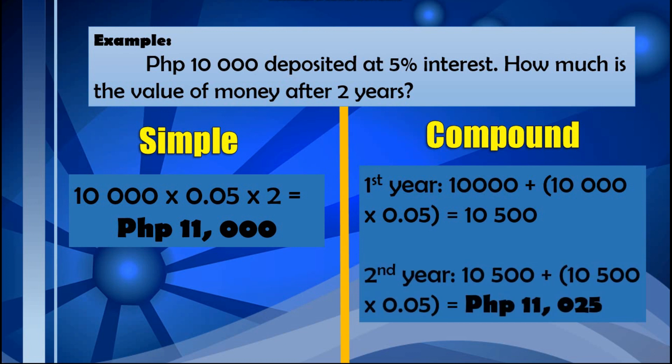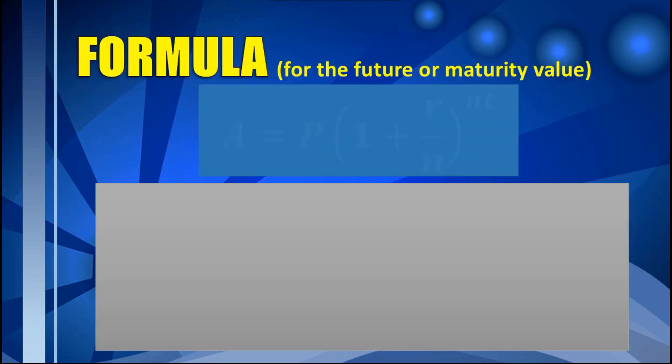During the second year, we use 10,500 — the principal plus the interest from the first year — and this value earns another interest. So we have 10,500 times 0.05, and that interest is added to 10,500, giving a total of 11,025. Comparing simple and compound interest, the compound interest value is larger. So what is the formula to find the future or maturity value in compound interest?